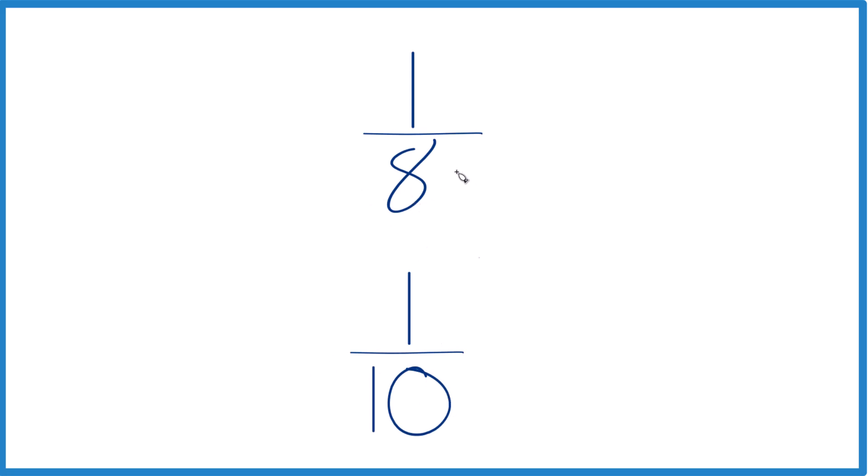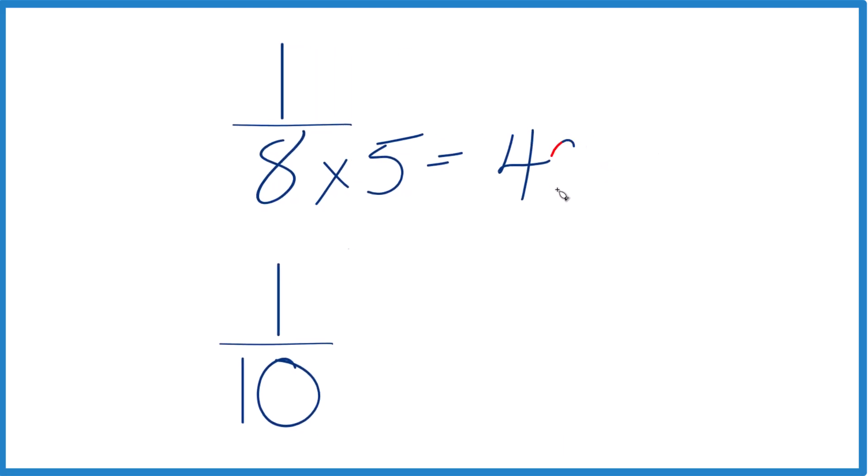So 8 times 5, that would be 40. So I know that I can do that. And then over here, 10 times 4, that also equals 40. But I can't just multiply the denominator by 4, I need to multiply the numerator by 4 too.